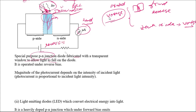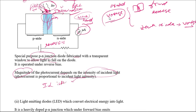Photo diodes are operated under reverse bias. The external voltage creates the junction and charge carriers are present, but only upon the incidence of light do these charge carriers start flowing through the load and current is generated. The magnitude of the photo current depends on the intensity of the incident light — the current is proportional to the incident light intensity. This is one important application: we can detect the presence of light using photo diodes.